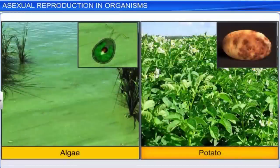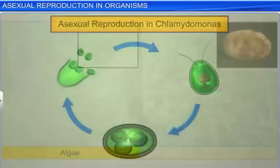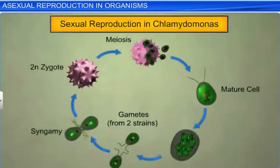Apart from single-celled organisms and animals, asexual reproduction is also seen in simple plants such as algae, as well as in certain higher plants such as potato. For instance, chlamydomonas, a type of algae, develops zoospores which later mature into new plants. However, during unfavorable conditions, chlamydomonas, as well as other types of fungi and algae, undergo sexual reproduction.